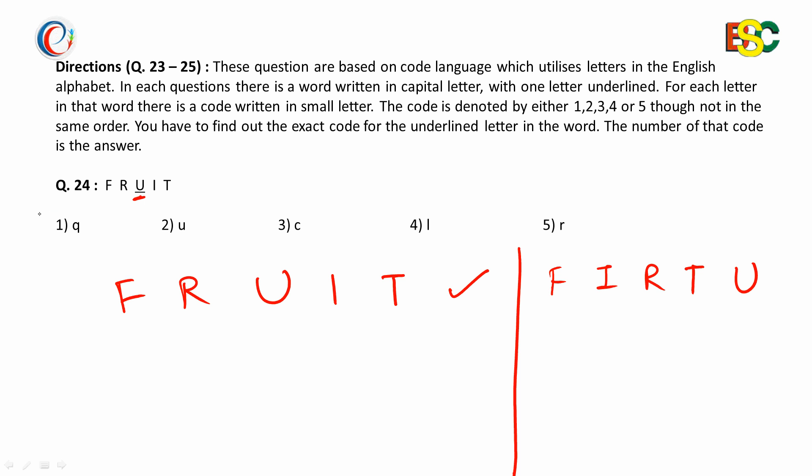And it is given that these options are the code for the letters of the word fruit. So we will arrange them in ascending order as well. It becomes C-L-Q-R-U.